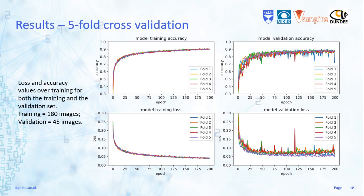Network performance was measured through a five-fold cross-validation experiment. In each fold, the network was trained on 180 images and validated on 45. The model was then tested on another set of 43 images after every fold. In this experiment, the accuracy value was calculated only within the annotated region of the images, since there is no way to know whether outside this region the network predictions are correct or not.